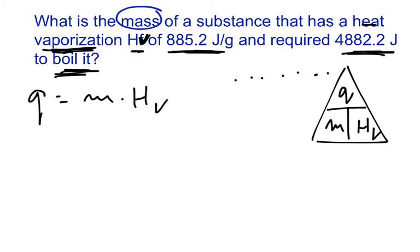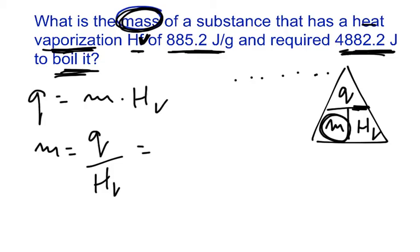All right, so in this case, we are trying to find the mass. So, to find the mass, it will simply be M is equal to Q over H of V, and just plug your numbers in. So, the J stands for joules, which is our Q value, so the 4,882.2 joules goes to the top, always use units, and the H of V value is given to us here. It's 885.2, and that's joules per gram.